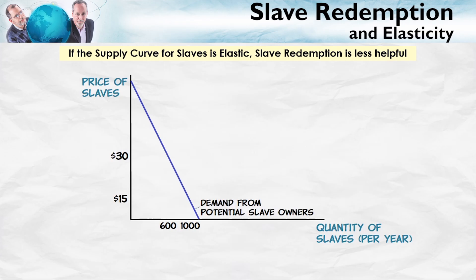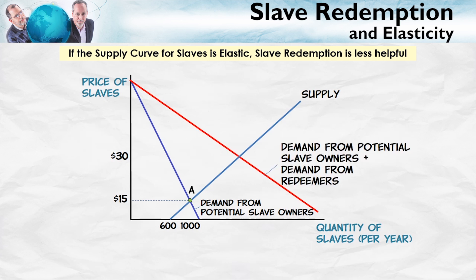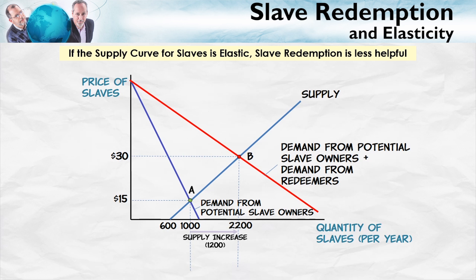We're basically going to repeat the analysis, but with a more elastic supply curve. Here's our demand curve, just the same as before. Here's our more elastic supply curve. I've drawn the curve so that the equilibrium is exactly the same as before — at point A, the price of slaves is $15 per slave, and there are a thousand people enslaved in our initial equilibrium. Now, what does the redemption program do? It increases the demand for slaves. At the new higher demand, we're at point B, our new equilibrium. The price of slaves is $30 per slave, not $50. The price has not gone up as much because now the higher price induces a greater quantity supplied.